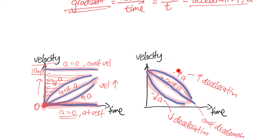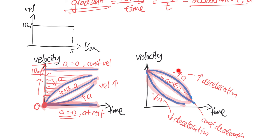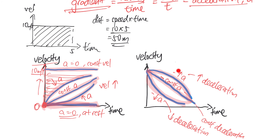There's one more feature of the velocity-time graph: the area underneath the graph. For example, if speed is 10 m/s and time is 5 seconds, you might use distance equals speed times time, giving 10 × 5 = 50 meters. If you think about it, multiplying 10 by 5 is exactly finding the area of the rectangle under the graph. So the area underneath a velocity-time graph gives you the distance traveled.